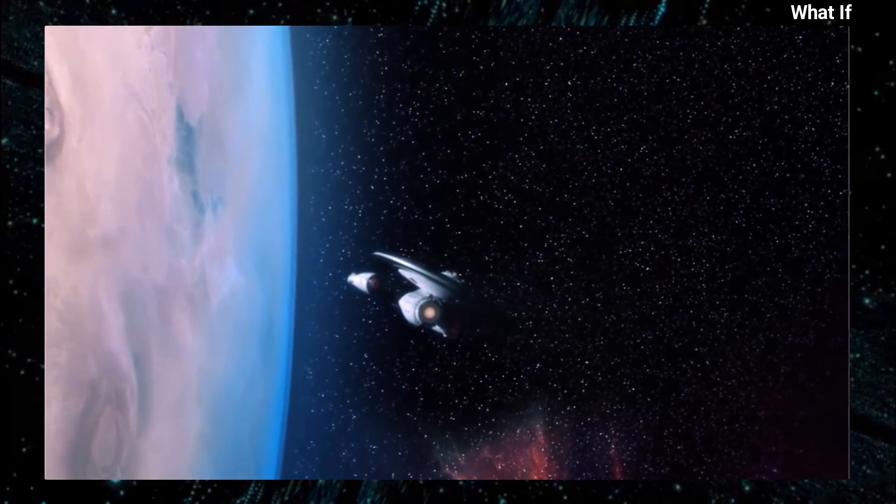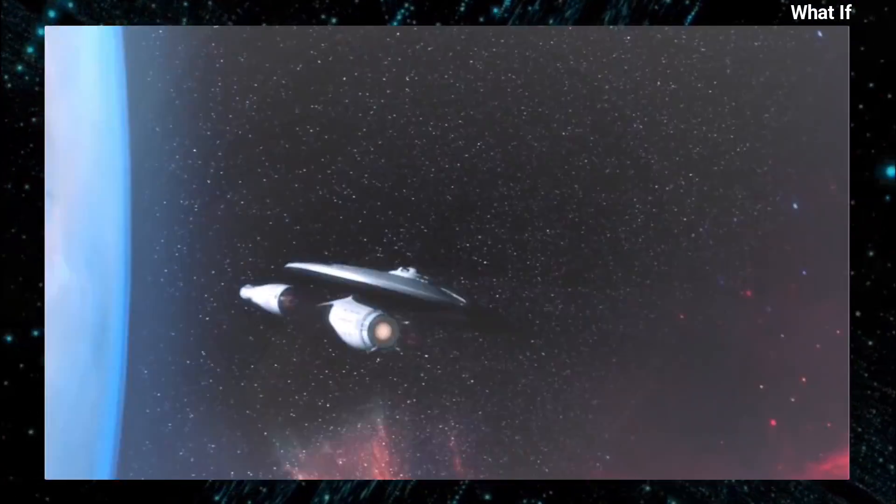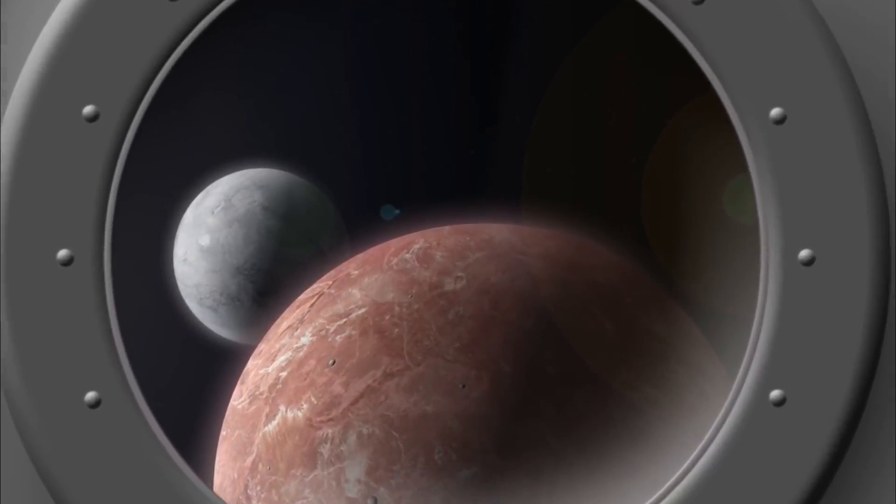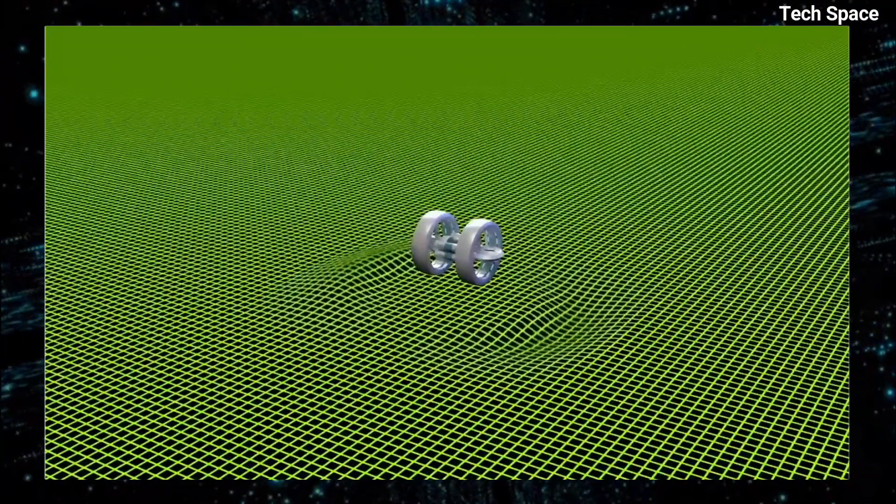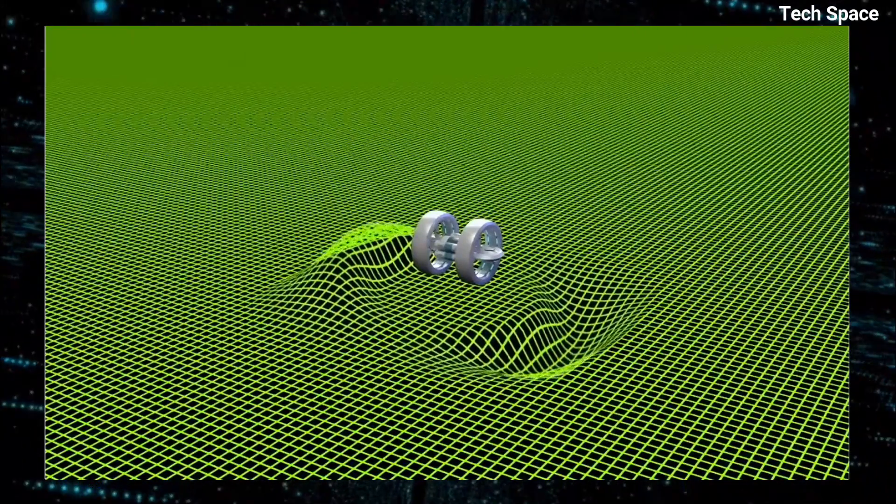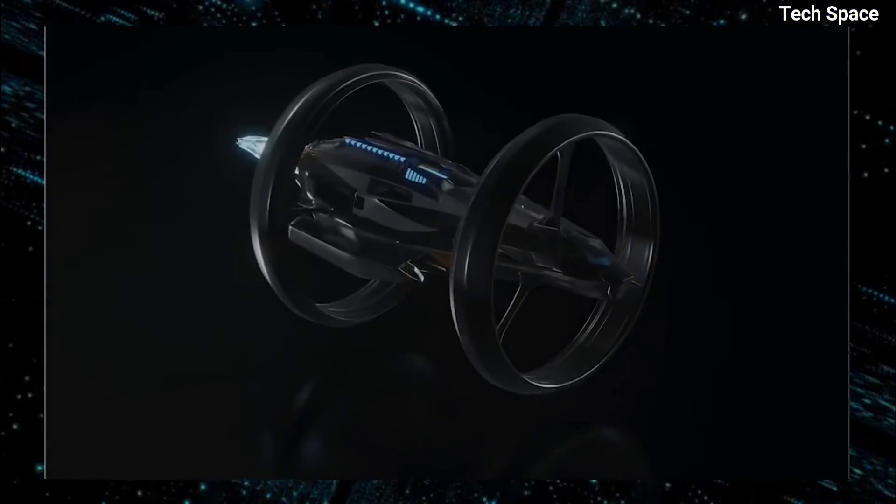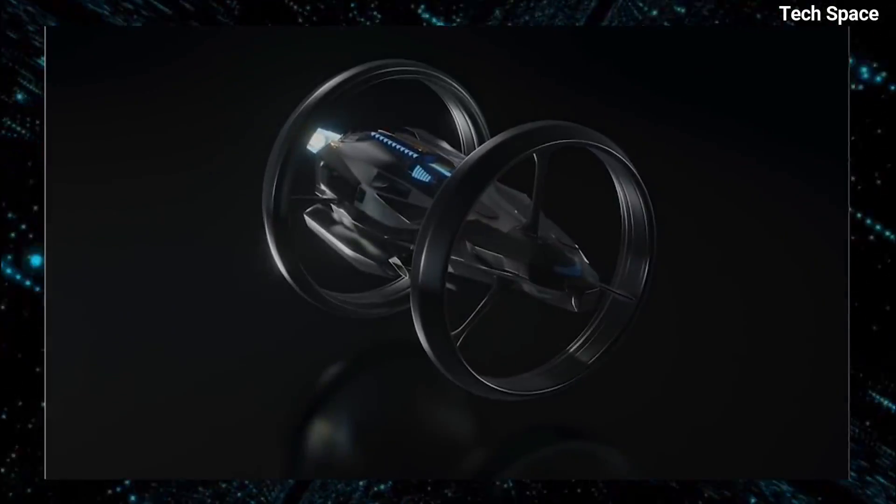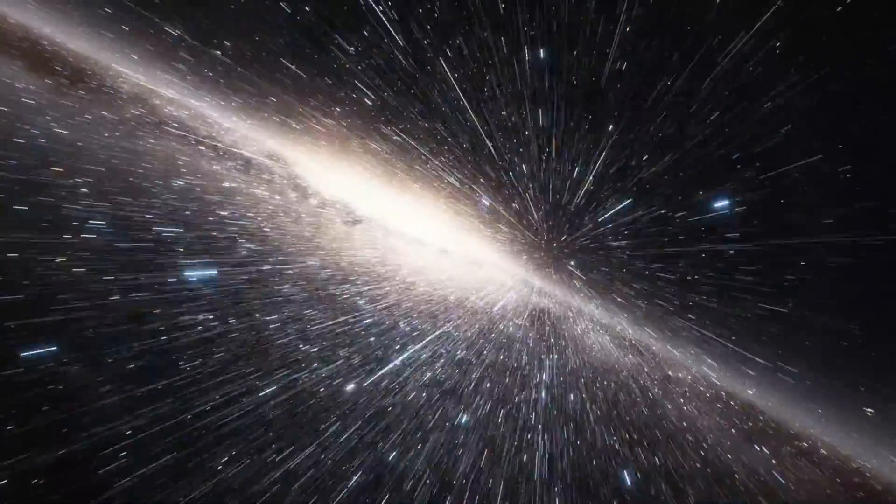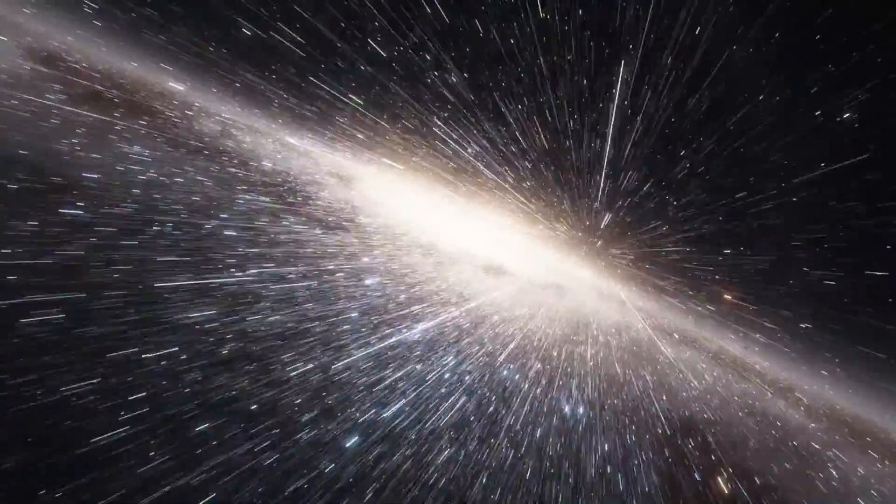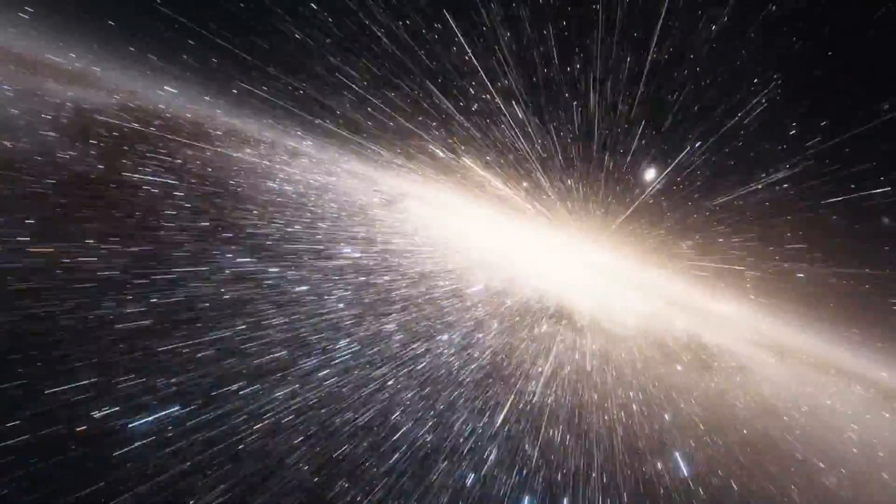Time dilation is a barrier to developing a warp drive. Time dilation occurs when two objects move at high speeds, according to Einstein's theory of relativity. Time dilation causes time to slow down for objects moving at high speeds. So, time moves slower for the spaceship than for the observer on Earth. As the spaceship approaches the speed of light, this effect becomes more pronounced, and at the speed of light, time stops completely.